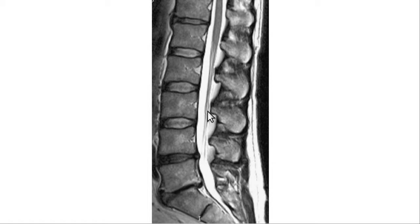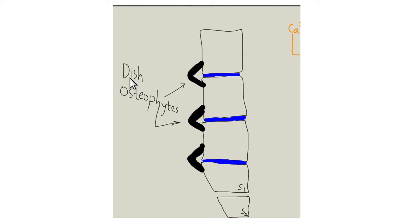DISH stands for Diffuse Idiopathic Skeletal Hyperostosis. You see bridging osteophytes with it. It's super common — I see it on most patients all day long. It's most common in the thoracic spine but also common in the cervical and lumbar spines. I see it every single day.